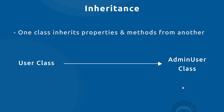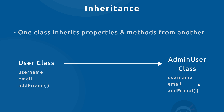Instead, we can inherit the properties and methods from the user class. We create an admin user class that inherits from user, automatically taking all the current properties and methods without redefining them. We can then add the extra property — admin level — just to this class. When we create a new admin user object, it will have the original inherited properties plus the additional admin level property.